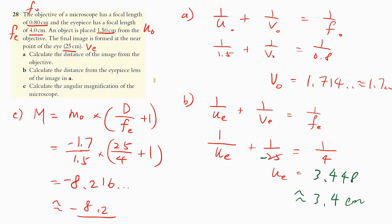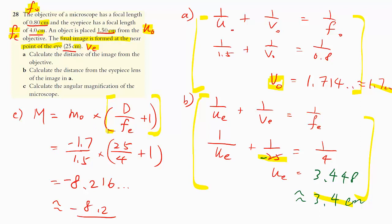The next question is again quite similar, so I hope you are starting to build confidence. Find V_O first using the lens formula — be careful with units, they are all in cm. Do the same for the eyepiece to find U_E. Once again, V_E is negative. Since the image is forming at 25 cm this time, you may use the normal adjustment equation. The answer is 8.2.